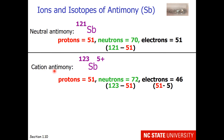Now let's try a cation of antimony with a higher atomic mass and a 5+ charge. It still has 51 protons. The neutrons, however, have gone up by 2 — now we have 123 minus 51, so this antimony has 72 neutrons, making it an isotope. Since this is a cation, we need more protons than electrons. We take our protons and subtract our charge: 51 minus 5 gives us 46 electrons. So 51 protons compared to 46 electrons confirms it's a cation.